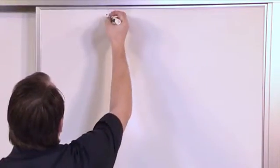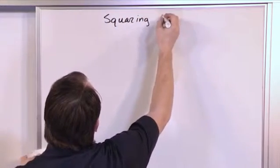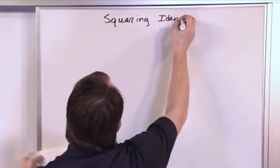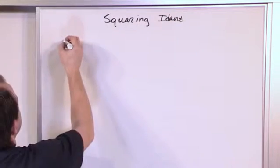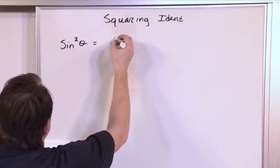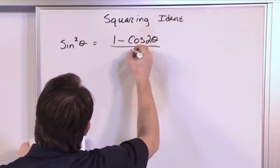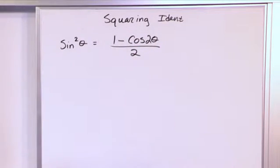So what we have for these so-called squaring identities is the following. The first one we have is sine squared of some angle, and that's equal to 1 minus the cosine of 2 times the angle over 2.